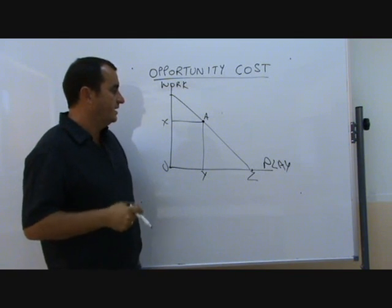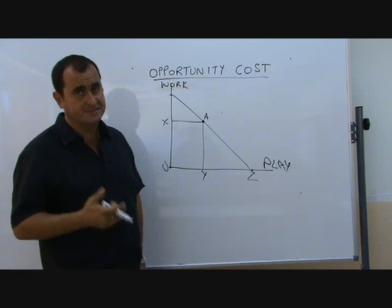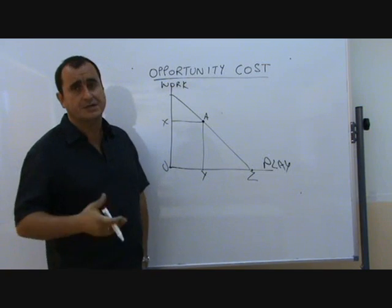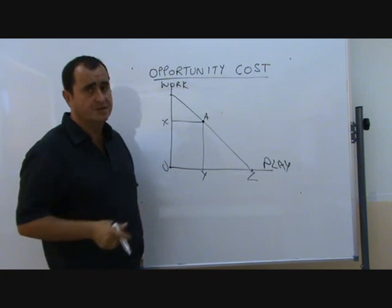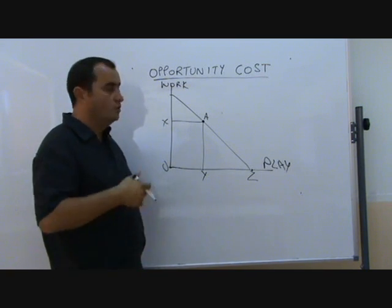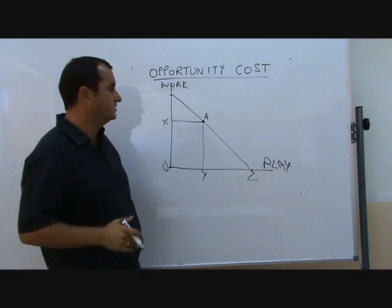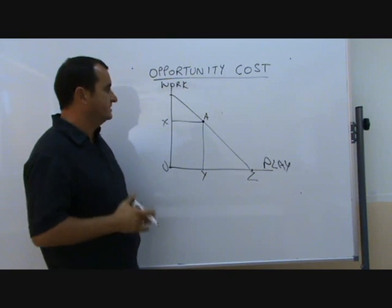Likewise, a government with only a fixed amount of tax revenue has to decide between things like defense expenditure, new roads and transportation systems, education, and so on. It's always opportunity cost because of our scarce resources.